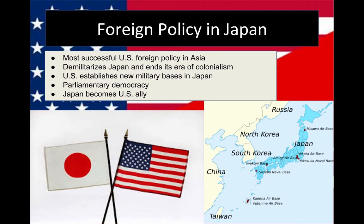Even more importantly, you're going to see that the US works with Japan to revitalize their economy. Because they're receiving so much aid from the United States, Japan's economy develops into a free market capitalist system. That's one of the major reasons why the US becomes a strong ally of Japan. They also set up a new constitution establishing a parliamentary democracy in Japan, which fulfills those principles of self-determination set forth by the Atlantic Charter. At the end of this occupation period and series of treaties, the US and Japan actually develop a stronger relationship.